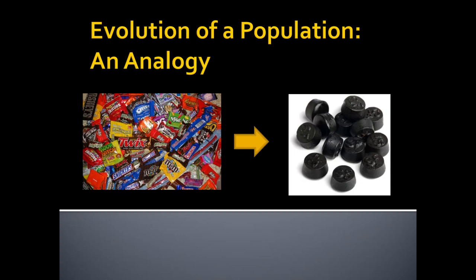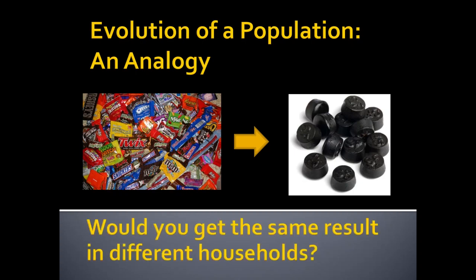We're going to talk about lots of aspects of this as we move forward, and I'll introduce you to a simulator we'll be using throughout the semester — but that will be in the next video. If I put this candy in your household, am I going to get the same result as in your neighbor's household? Most likely you'll have some — maybe even a great deal of — variation in outcome. Environment is a key predictor of outcome when we're talking about natural selection.